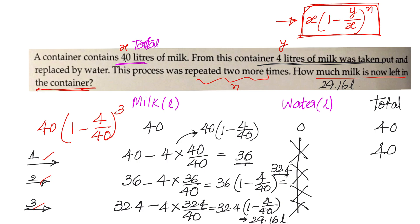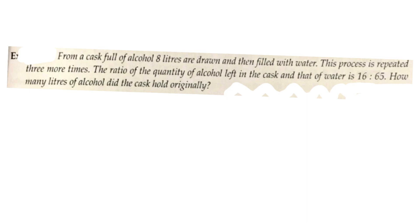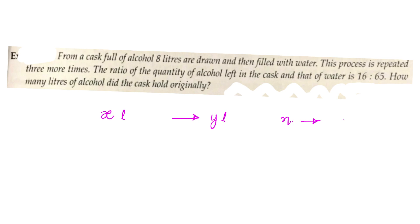Leveraging this shortcut formula, let us solve another interesting problem. From a cask full of alcohol, 8 liters are drawn and then filled with water. This process is repeated three more times. The ratio of alcohol left to water is 16 to 65. How many liters of alcohol did the cask hold originally? We know the formula: if there is x liters initially, we remove y liters of liquid and replace with water for n times, then the amount of liquid left after n dilutions is x into 1 minus y by x whole to the power of n.